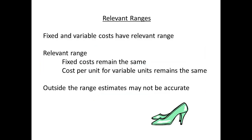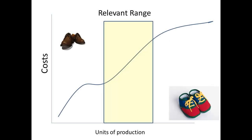Whilst estimates are fine for a typical production run, the estimates may not be accurate if the volume of activity is greatly reduced or greatly increased. Fixed and variable costs are usually only considered reliable within a particular range, called the relevant range. For production outside this range, the estimates may not be accurate. The relevant range has been highlighted, and outside this range it is clear that estimates would not be reliable.